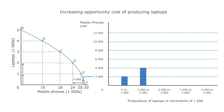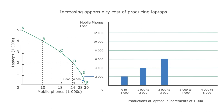And if we increase the production of laptops by another thousand, this results in a further six thousand fewer mobile phones being produced. Moving from point C to point B, the opportunity cost of producing laptops rises even more, and eight thousand mobile phones must be sacrificed to increase the production of laptops from three thousand to four thousand.